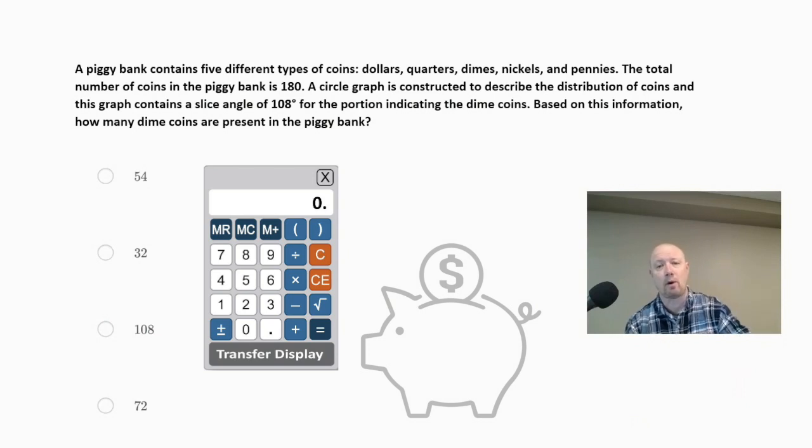We will have access to a four-function calculator. So the first thing we need to identify is that we're using a circle graph here. A circle graph is a good way to represent parts of a whole. So what's telling us in the problem here is that we have five different categories. So there's going to be five slices of this circle, or kind of like slices of pie. And one of our slices is the dime category, and that slice is 108 degrees. So what we need to do is we need to figure out what fraction of 360 is 108, because in a full circle we have 360 degrees. So what we're going to do is we're going to take 108, and we're going to divide it by 360 to get what portion that is. And then if we do that on our calculator, we're going to get 0.3. So that means that three-tenths of the coins are dimes.